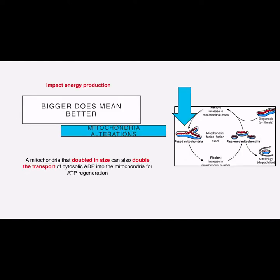I created this for you guys. The question is: how does bigger mitochondria impact energy production? When it comes to mitochondria, bigger is better. The bigger mitochondria is a result of alterations from exercise. A mitochondria that is doubled in size can also double the transport of cytosolic ADP into the mitochondria for ATP regeneration. The bigger it is, the faster it can take in ADP, the faster it can turn it into ATP, and the more reduction there is in any adverse signaling events caused by high ADP in the cell.